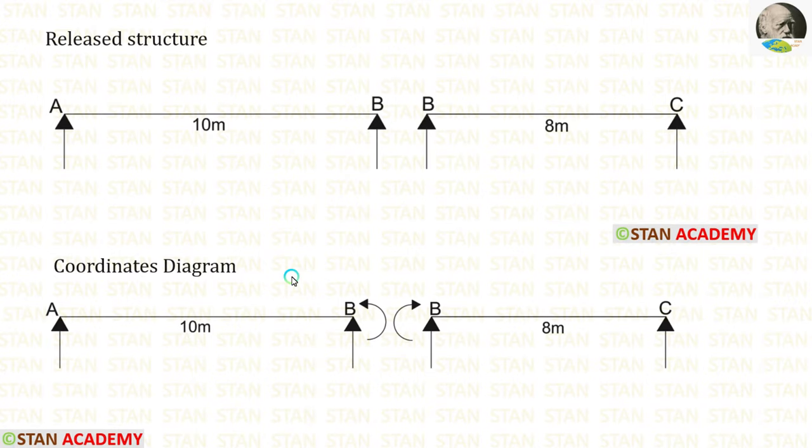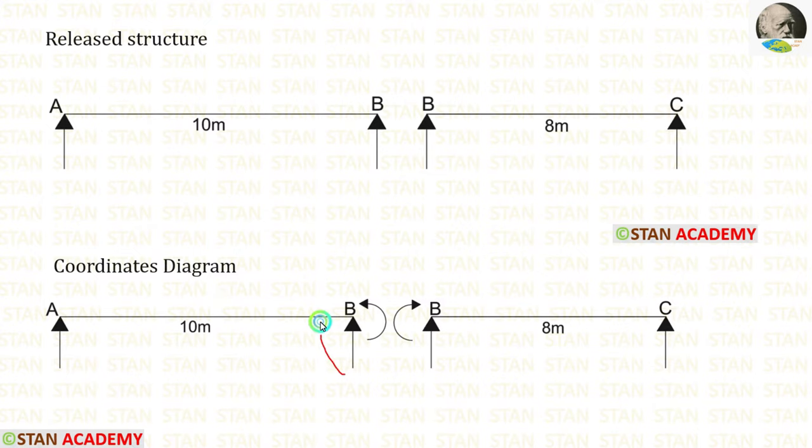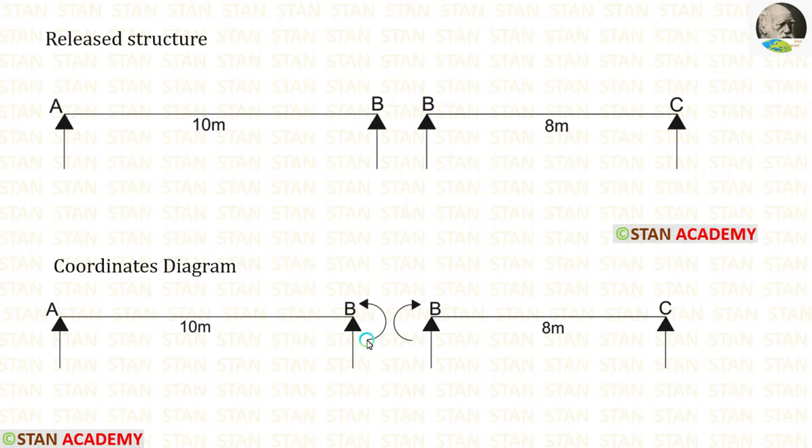Now let us make the coordinates diagram. In this analysis, we are having only one coordinate — at point B — because we have removed MB. MB will be acting in both directions: for span AB in the anticlockwise direction and for span BC in the clockwise direction.